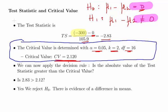We can now apply the decision rule. Is the absolute value of the test statistic greater than the critical value? In this case, yes, it is. 2.83 is greater than 2.12. What does that mean? It means that we can reject the null hypothesis. There's evidence of a difference in means for the populations.